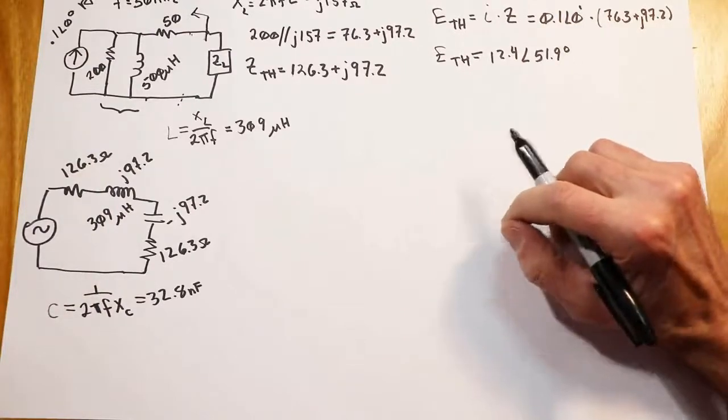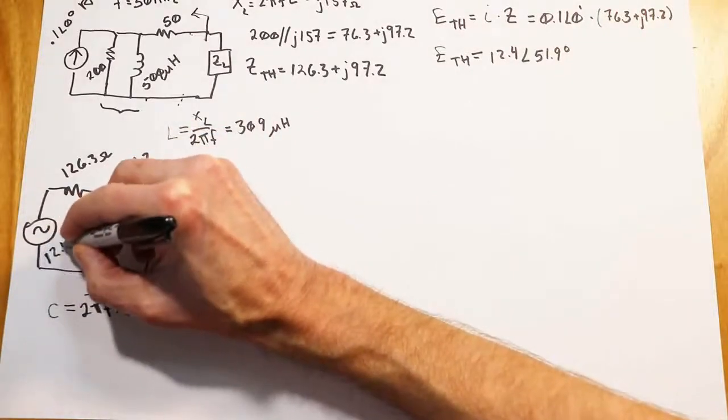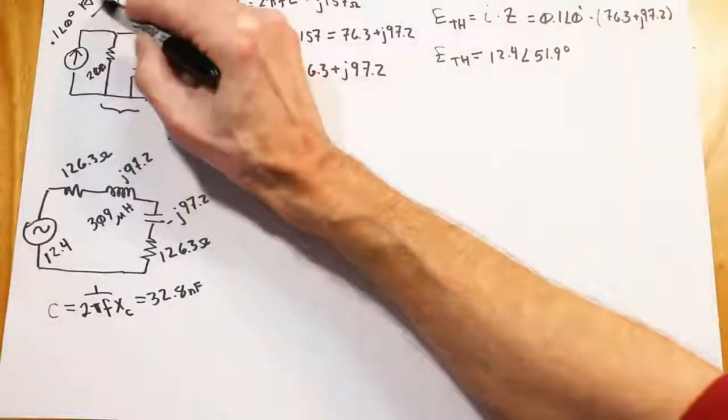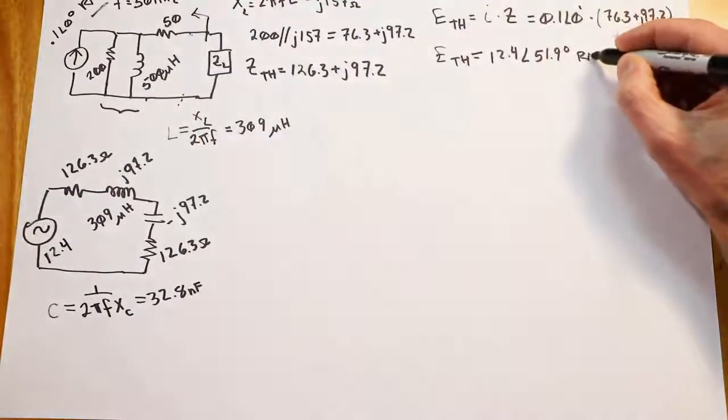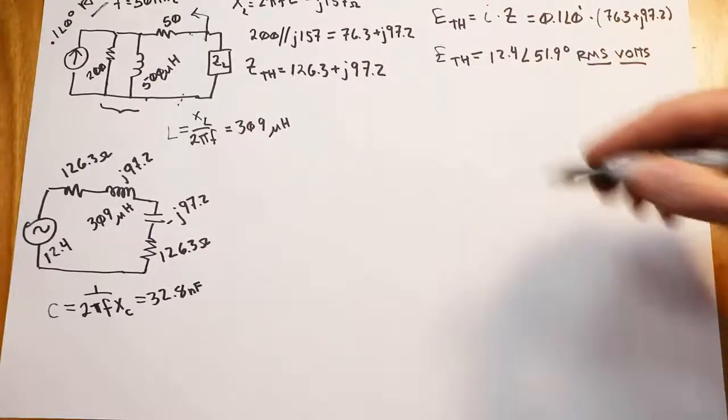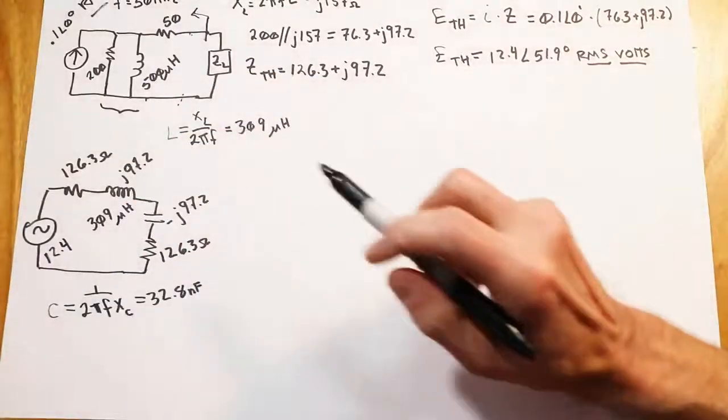You might notice the angle's a little bit more than 45 degrees. It's positive. Looking at this, that seems to make sense. We have more inductive reactance than we have resistance in this combo. So that's a reasonable looking value. Now, coming back here, if this is 12.4 as a magnitude, that would be RMS, of course, because our current is RMS. So let's be very specific about that. That's RMS volts.